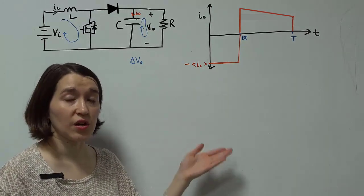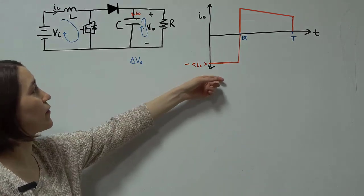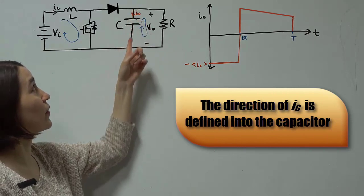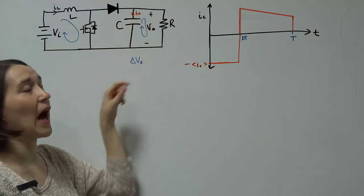This is the current for the capacitor during the two stages. So during the first stage, this current is going into the capacitor. During the first stage, current is coming out of the capacitor.